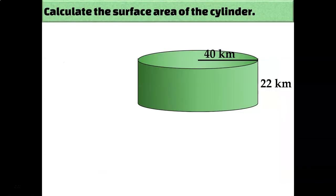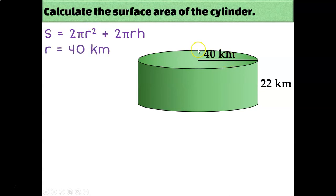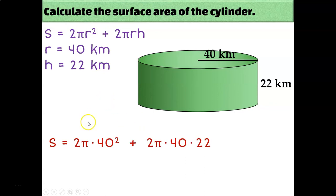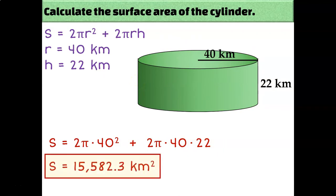Let's take a look at an example. This is a cylinder so I will be using the surface area of a cylinder formula. The first thing I need is the radius, which is clearly labeled on my diagram as 40. Then I need the radius again, which is still 40, and the height, which is labeled as 22. Everything was already labeled for us, so I'll just plug those numbers into my formula of 2 pi times 40 squared plus 2 pi times 40 times 22, type that into my calculator, and get an answer of about 15,582.3 square kilometers.